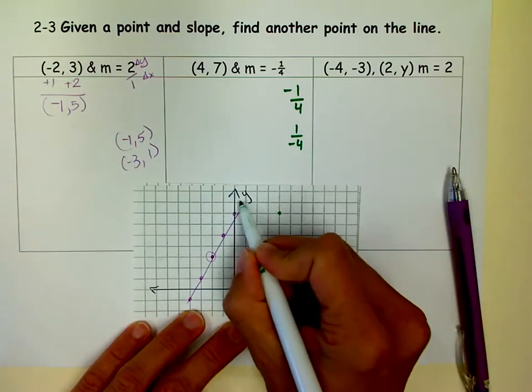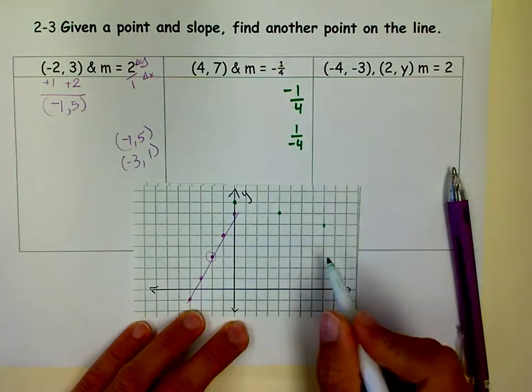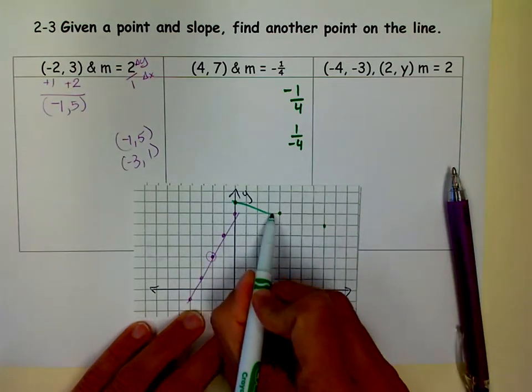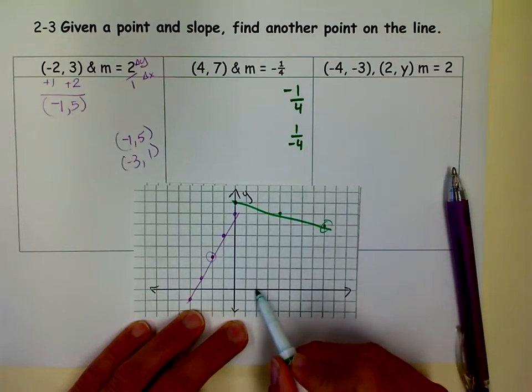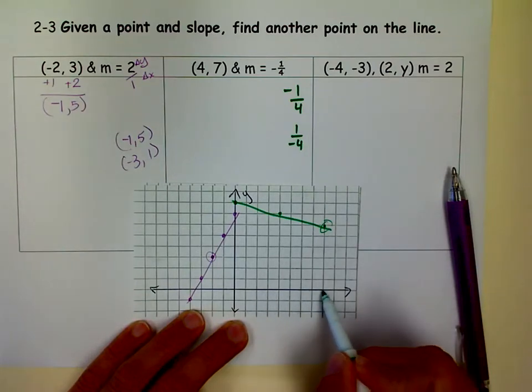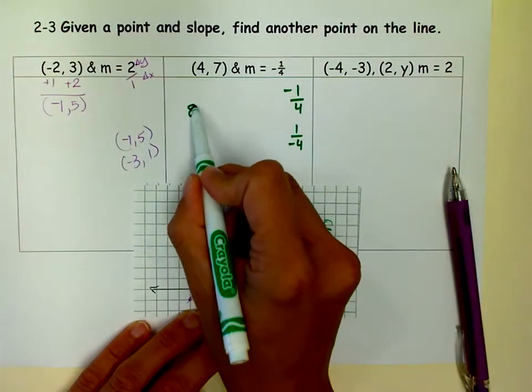So I'll show you if I go up 1 and left 4, or if I go down 1 and right 4. It's not that I get to the same point, but I am on the same line. So I can pick either one of those points. So that's 8, 6 works.